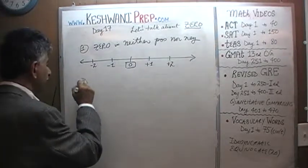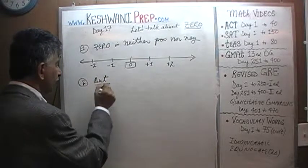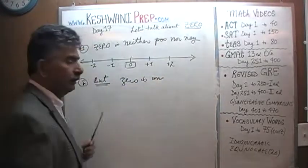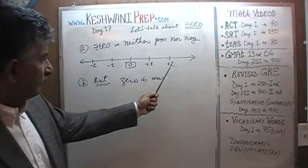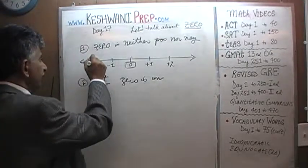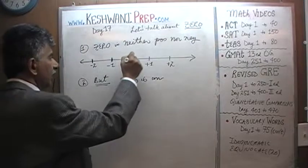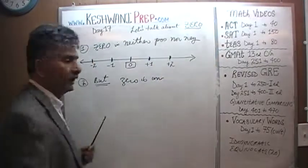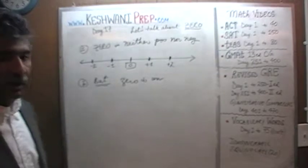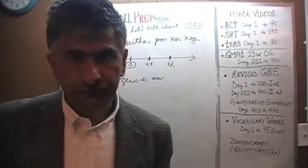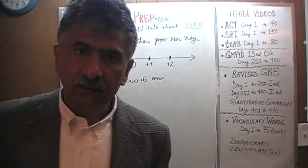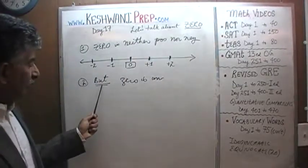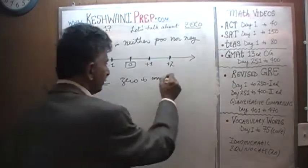What we also have to understand is that every tick mark on the number line — each one of these tick marks — represents a whole number, an integer. Zero occupies one of those tick marks, and therefore zero is an integer.